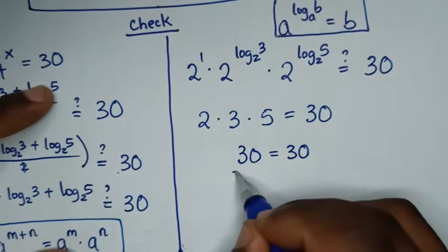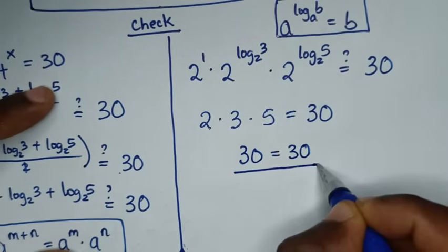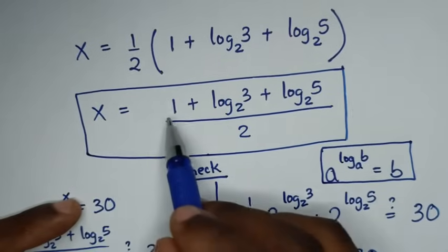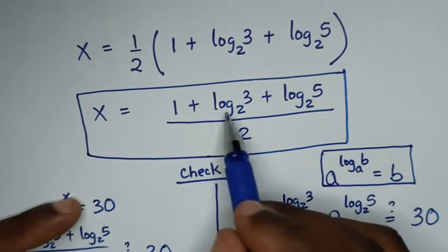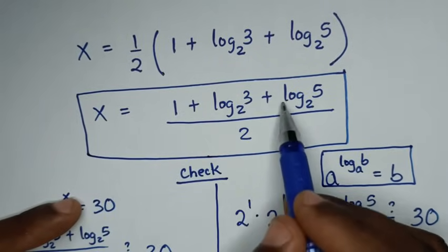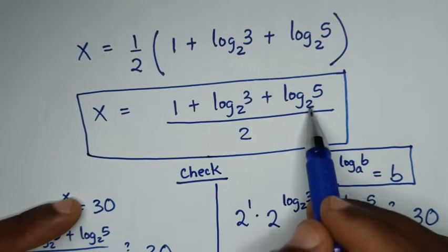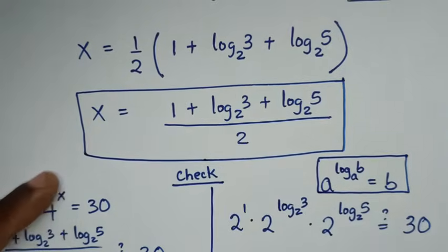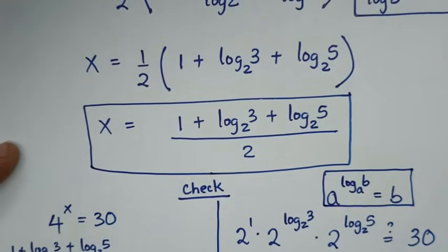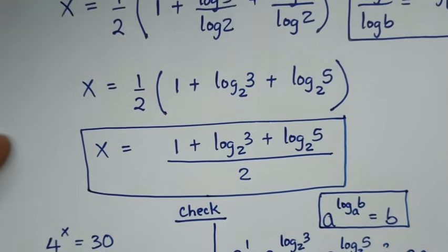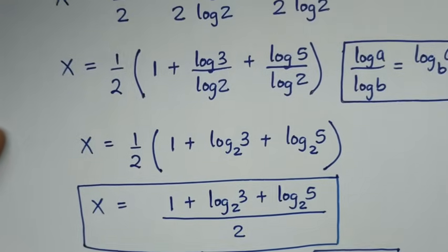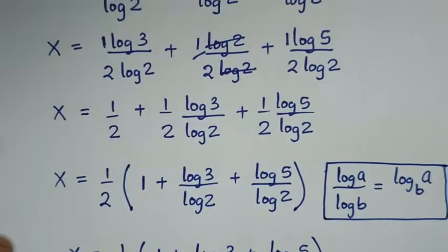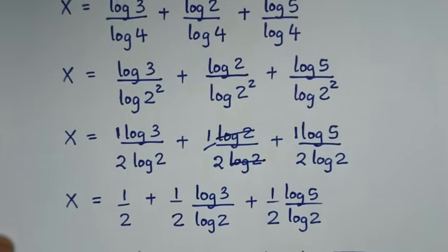So left side and right side are equal, then it is true. The value of x is 1 plus log base 2 of 3 plus log base 2 of 5, all over 2. Thank you for watching, don't forget to subscribe to my channel, and see you in the next video. Bye-bye!